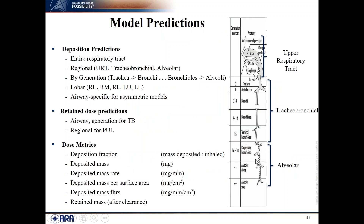What does it predict? It predicts deposition, dose, and dose metrics for the entire respiratory tract, by region — URT (head volume), TB, and alveolar — and by generation, from trachea and bronchial all the way down to bronchioles and alveoli. It also predicts lobar deposition — for example, right upper, right middle, right lower, and so forth — and for asymmetric geometry, airway-specific deposition.